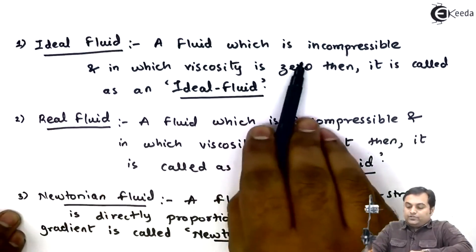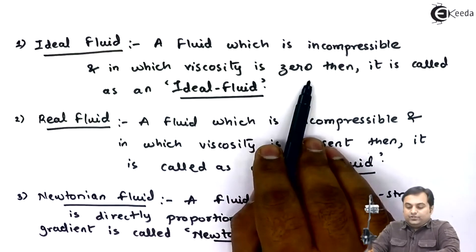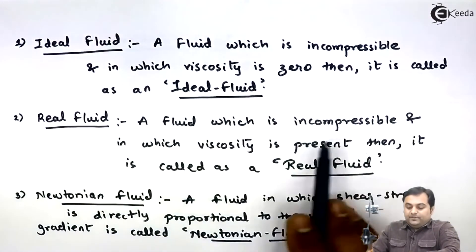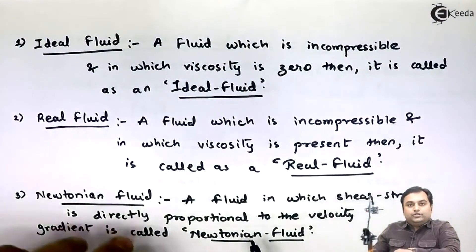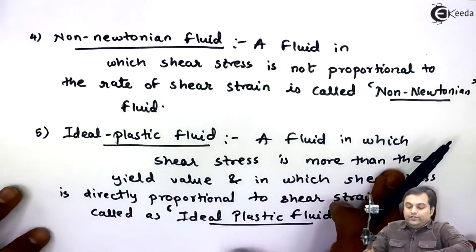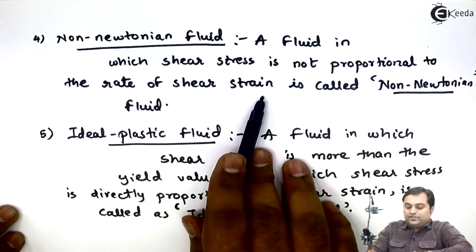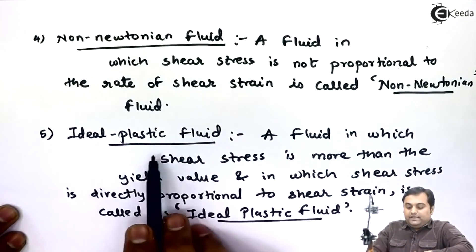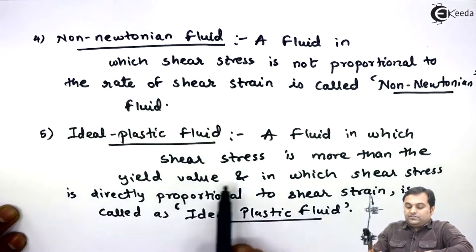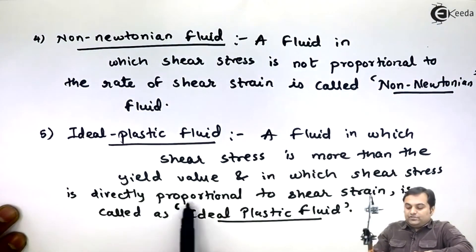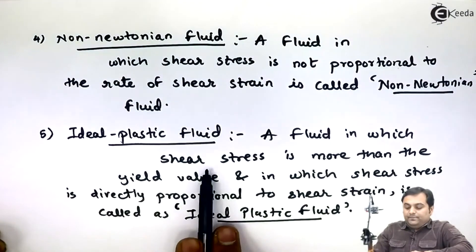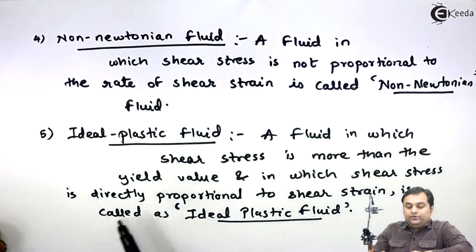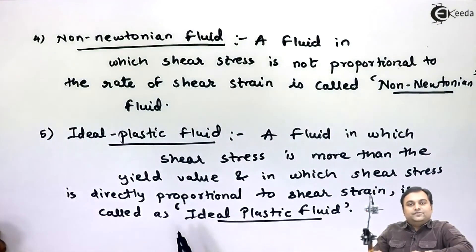In this video we have seen five types of fluid: ideal fluid — incompressible with zero viscosity; real fluid — incompressible with viscosity present; Newtonian fluid — shear stress directly proportional to velocity gradient, following Newton's law of viscosity; non-Newtonian fluid — shear stress not proportional to rate of shear strain, not following Newton's law; and ideal plastic fluid — shear stress exceeds yield value and is directly proportional to shear strain, partially following Newton's law.